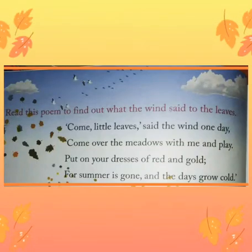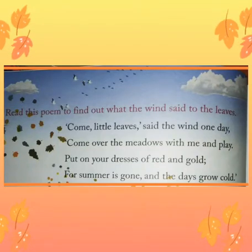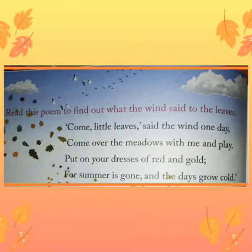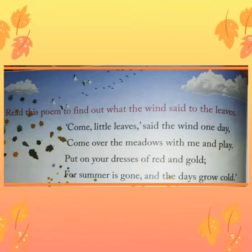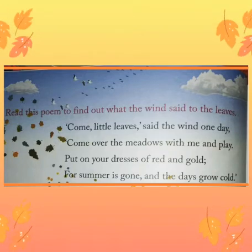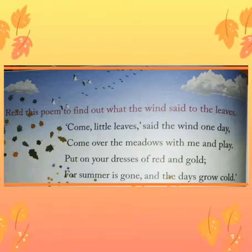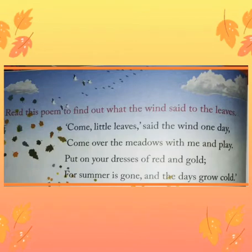Come little leaves, said the wind one day. Come o'er the meadows with me and play. Put on your dresses of red and gold, for summer is gone and the days grow old. Here the wind asks the leaves to come away with it and play. He is calling the leaves to play with him. It says that summer is gone and it is autumn now. Autumn means the weather begins to get colder. Autumn is the time when trees shed their leaves.